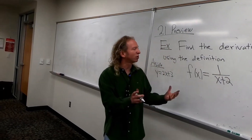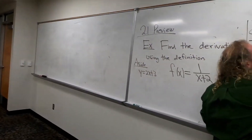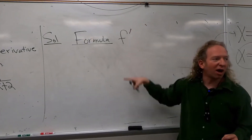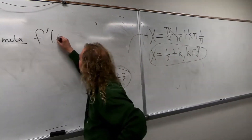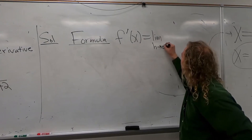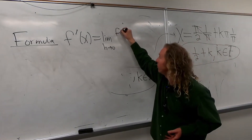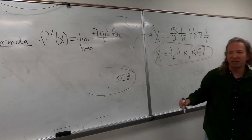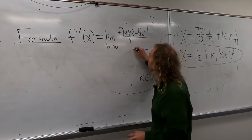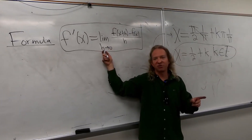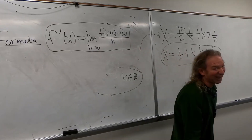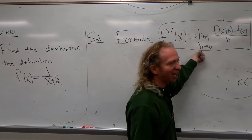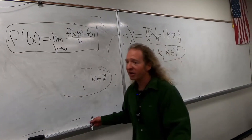We're going to construct it from scratch next time. For now, we'll just use the formula. So f prime of x — f prime, P-R-I-M-E — is equal to the limit as h approaches zero of the difference quotient. You may have studied this briefly in college algebra. In this class, we do the same thing, except at the end we plug in zero for h. You may have seen it with delta x instead of h — delta x makes it so much harder.